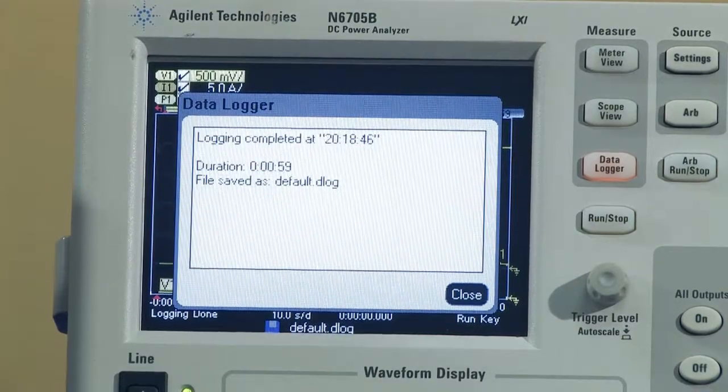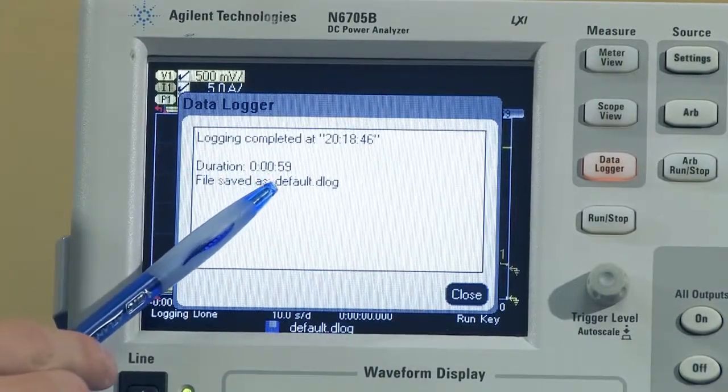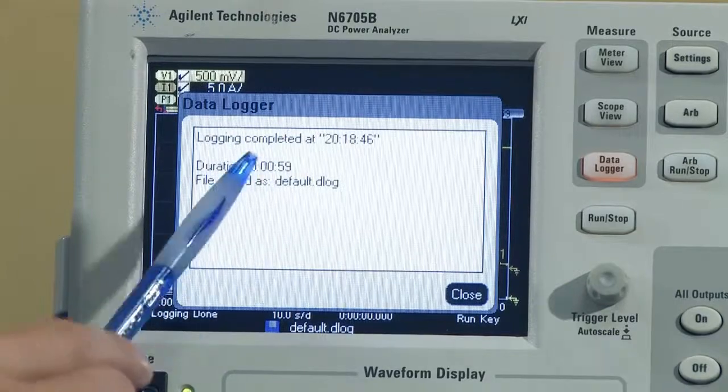Our 60 seconds that we set for the data logger is now done. It just gave us an indication of that, and it tells us that all of our data has been stored in the default.dlog file.